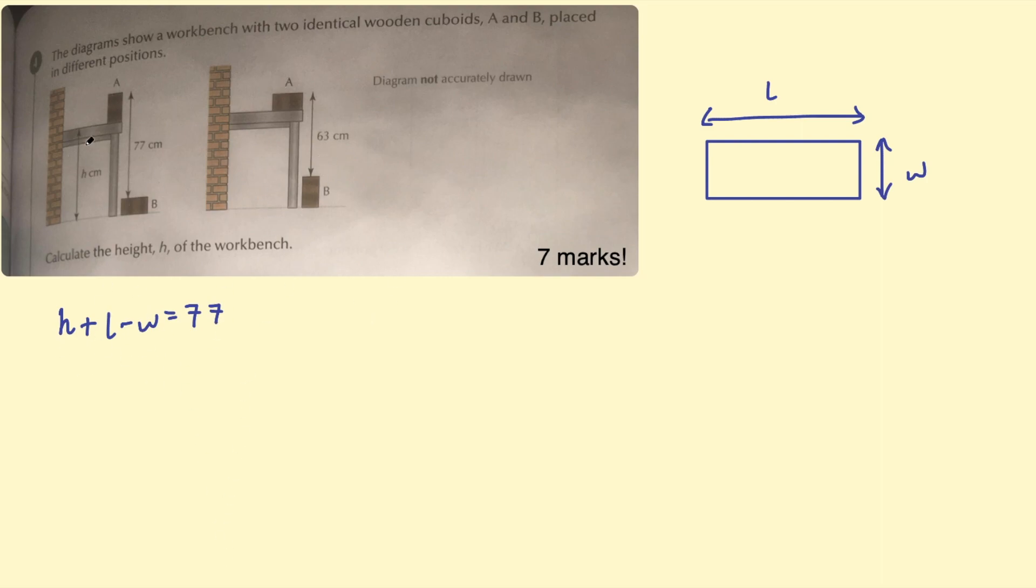So for this second one, they haven't given us H, but it's still this length here. This is still H. And we are now adding on the width. So we're doing H plus the width of that block. And we're subtracting the length. So take L. And now this measurement is 63.